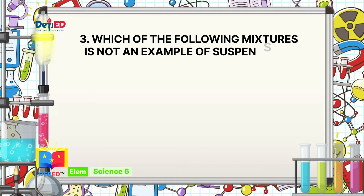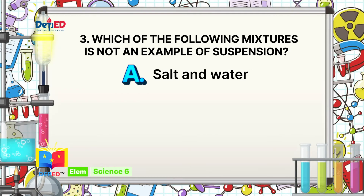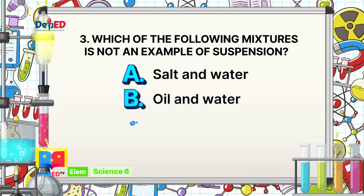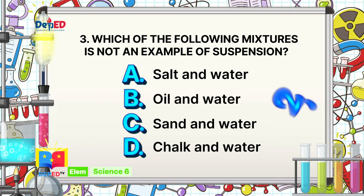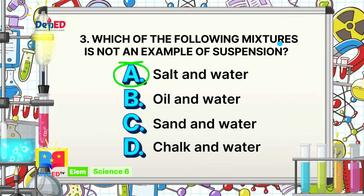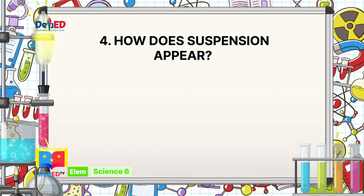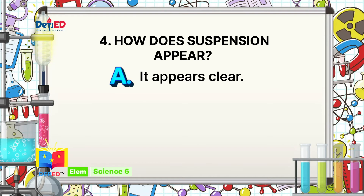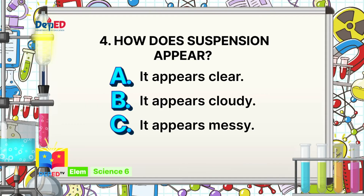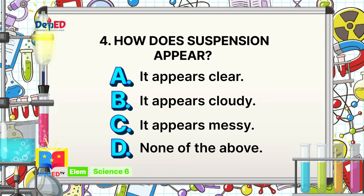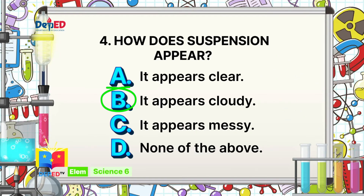Number 3: Which of the following mixtures is not an example of suspension? A. Salt and water, B. Oil and water, C. Sand and water, or D. Chalk and water. The correct answer is Letter A — Salt and water. Number 4: How does suspension appear? A. It appears clear, B. It appears cloudy, C. It appears messy, or D. None of the above. The correct answer is Letter B — It appears cloudy.